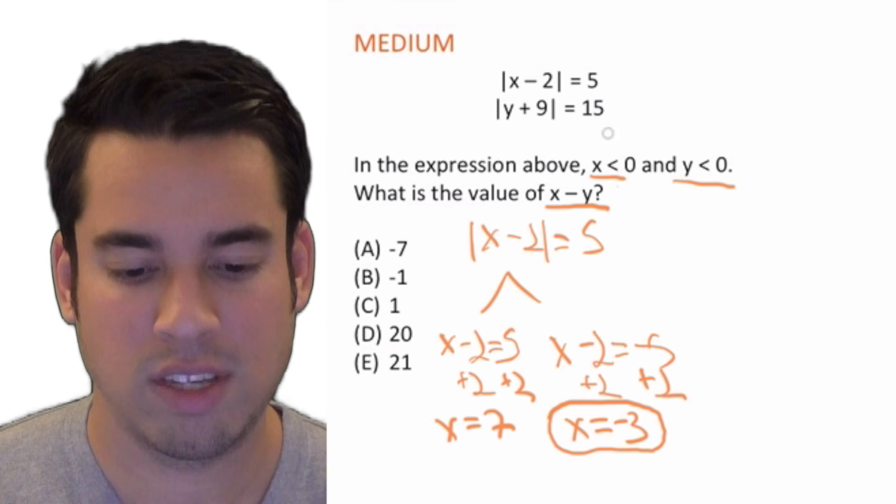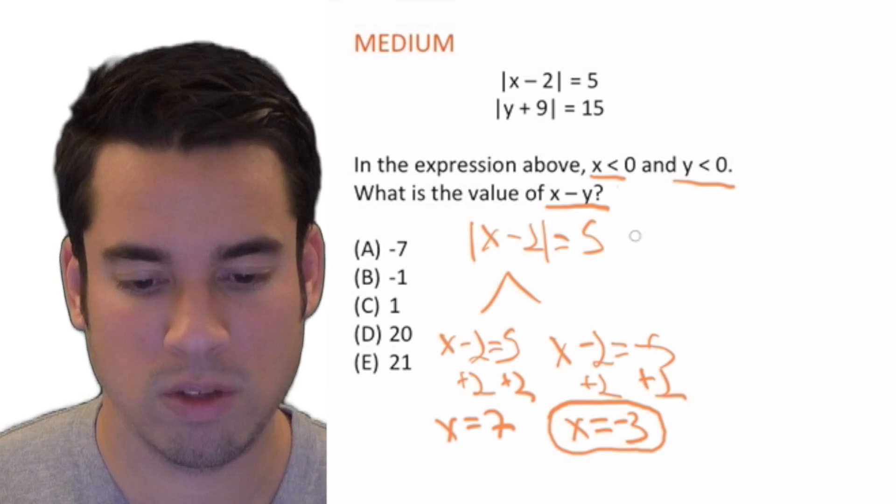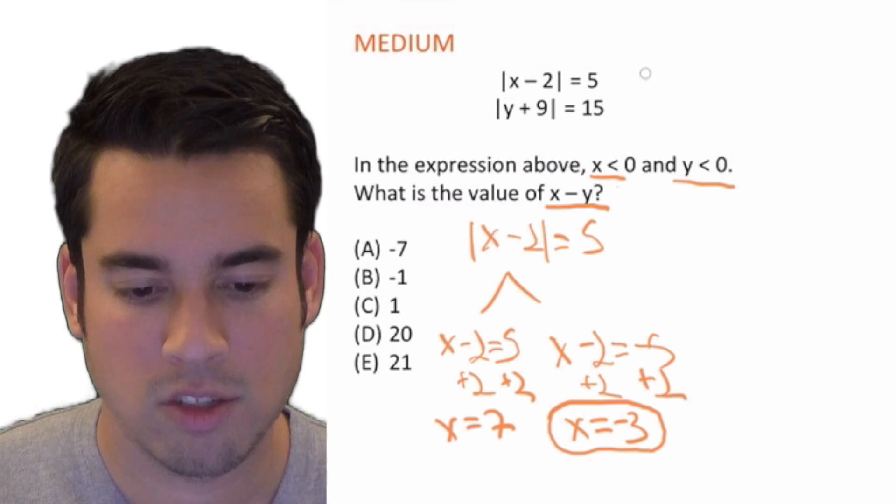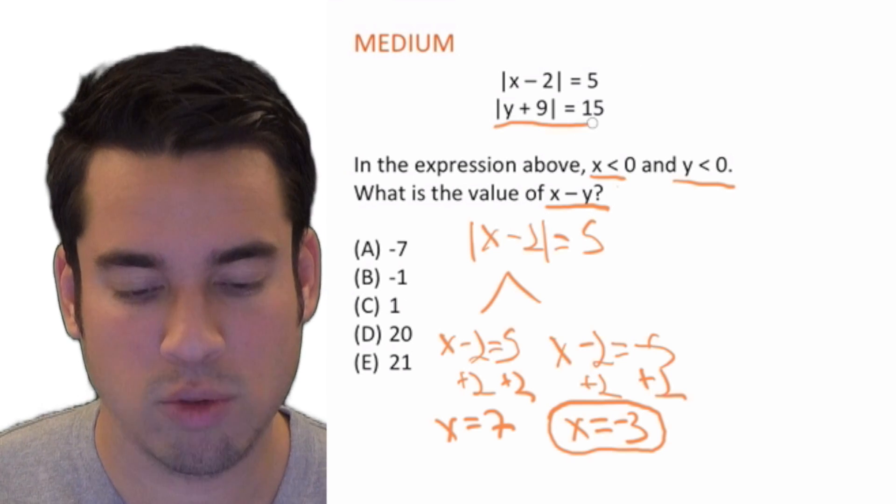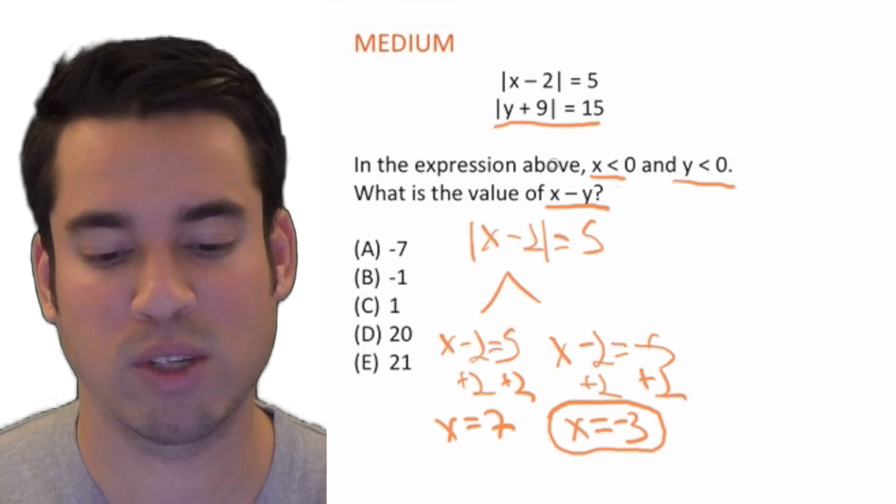Same type of thing. We're a little short on space here, let me do it like this. So |y + 9| = 15, we're going to split it into two equations as well.